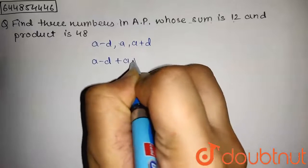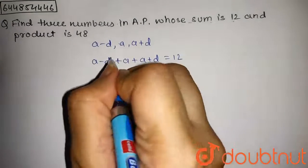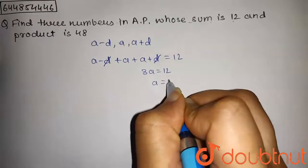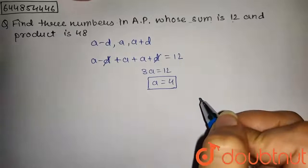Now this d and this d will be cancelled out. We get 3a equals 12, or a equals 4. So the value of a is 4.